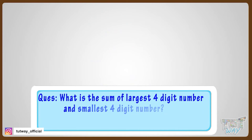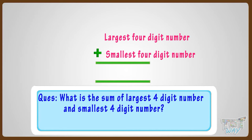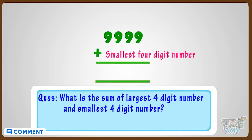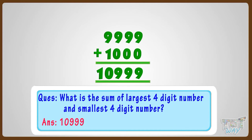What is the sum of the largest four-digit number and the smallest four-digit number? Let's find it out. We need to add the numbers. The largest four-digit number is 9,999, and the smallest four-digit number is 1,000. So 9,999 plus 1,000 gives us 10,999. Good!